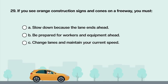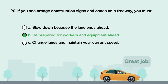If you see orange construction signs and cones on a freeway, you must: A. Slow down because the lane ends ahead. B. Be prepared for workers and equipment ahead. C. Change lanes and maintain your current speed. Answer is B: Be prepared for workers and equipment ahead.